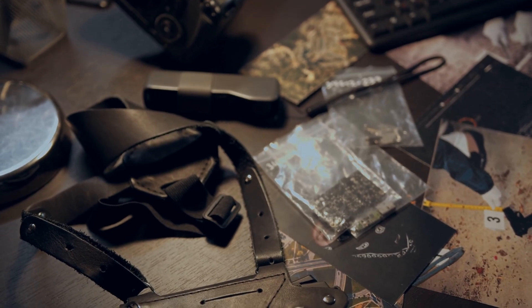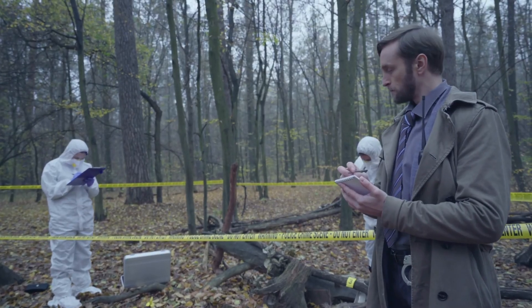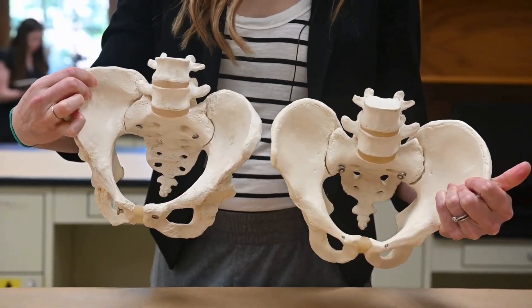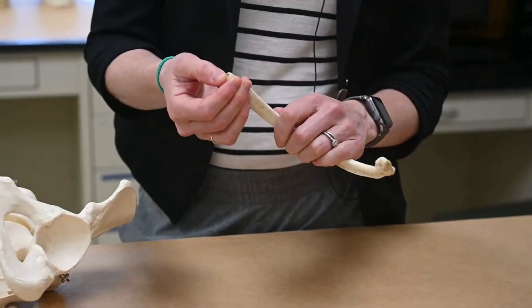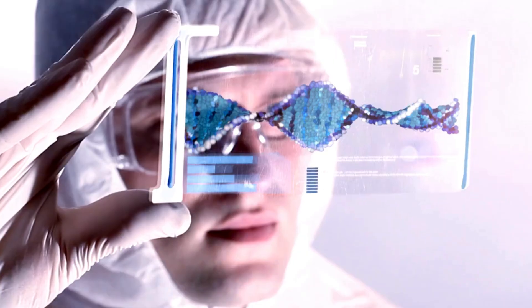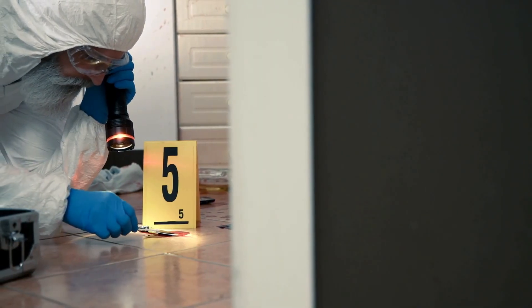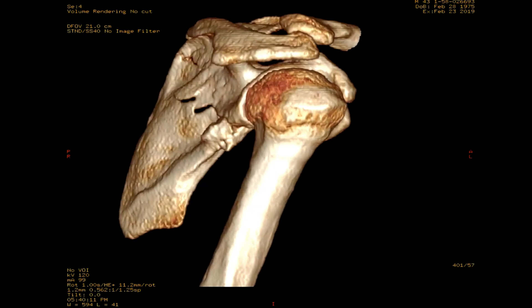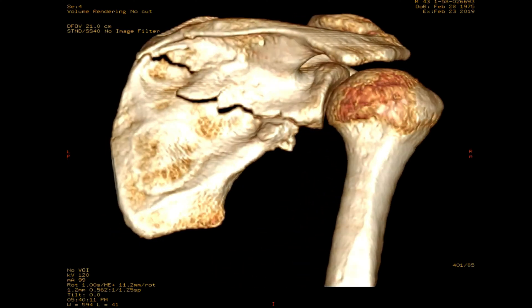Forensic anthropologists help law enforcement answer critical questions: they identify whether remains are modern or ancient, estimate age at death, biological sex, and height, and even reconstruct events around the time of death. These insights come primarily from skeletal analysis — investigative methods like DNA or blood spatter analysis aren't things forensic anthropologists do. Instead, they calculate the MNI (minimum number of individuals), construct a biological profile, determine biological sex, and estimate age at death, all by looking at skeletal remains.